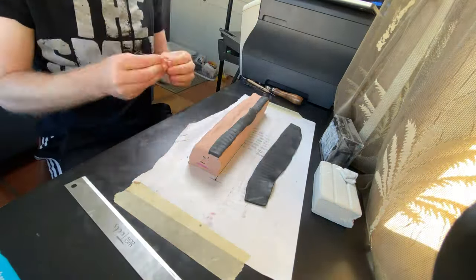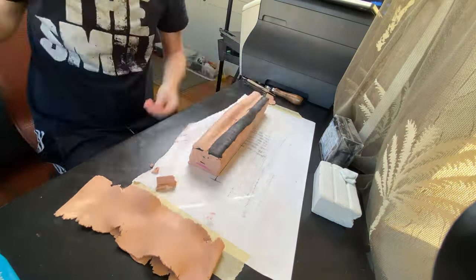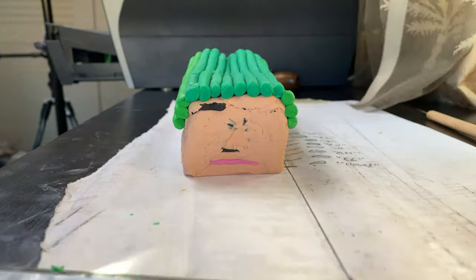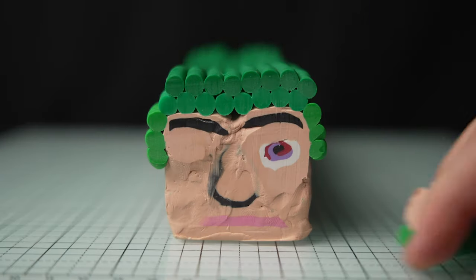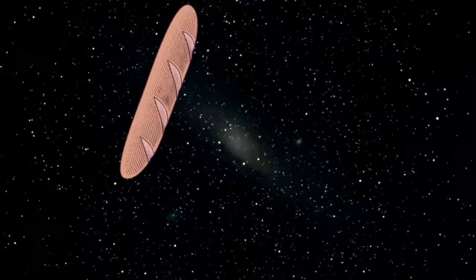The eyebrows are also simple, and are just thin black sheets that I flow into different angles, depending on what emotions I want the face to convey throughout the animation. After filling in spaces, and giving him long green hair tubes, it's done. Also, don't worry, it looks much better after being sliced.